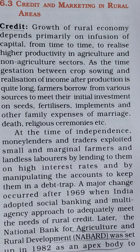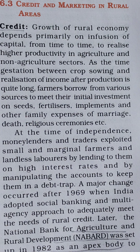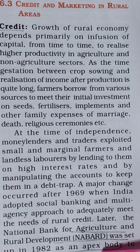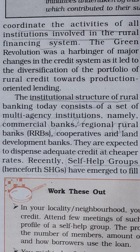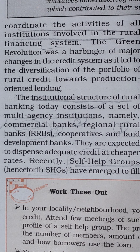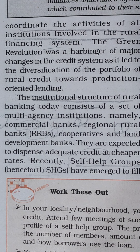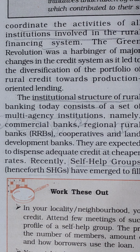A major change occurred after 1969 when India adopted social banking and a multi-agency approach to adequately meet the needs of rural credit. Later, the National Bank for Agriculture and Rural Development, that is NABARD, was set up in 1982 as an apex body to coordinate the activities of all institutions involved in the rural financing system.